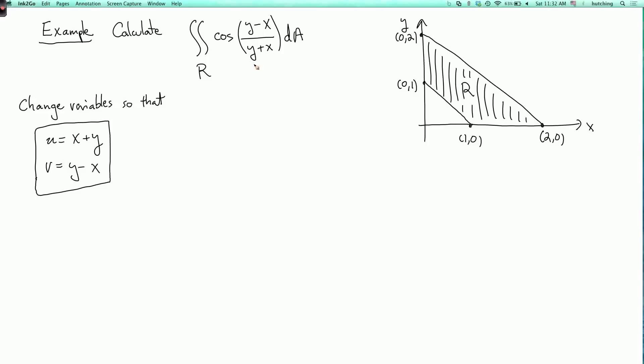Now, this isn't quite the way it's supposed to look because we're not supposed to have u and v being functions of x and y. We're supposed to have x and y being functions of u and v. So I need to solve for x and y in terms of u and v.